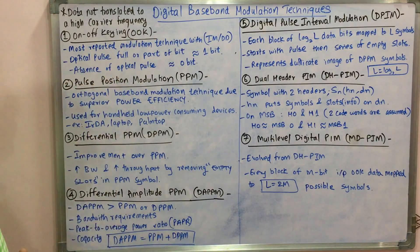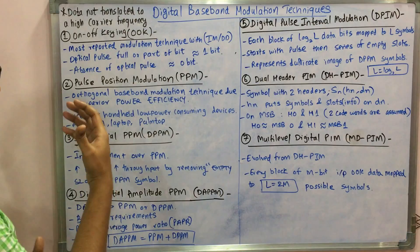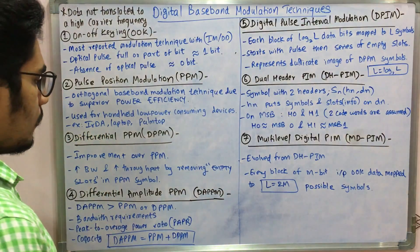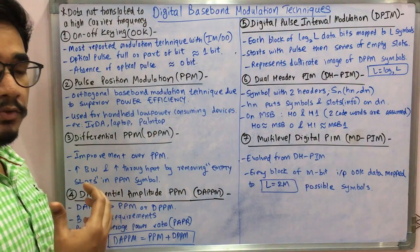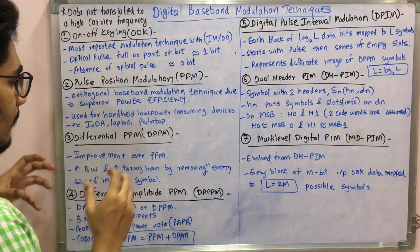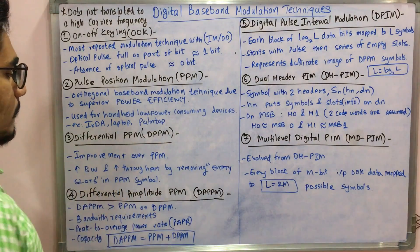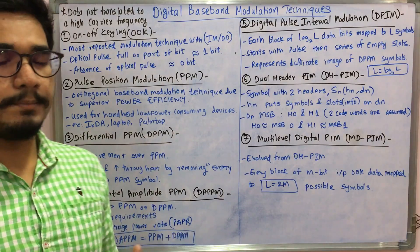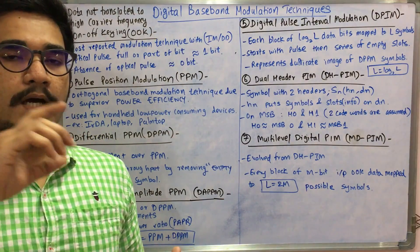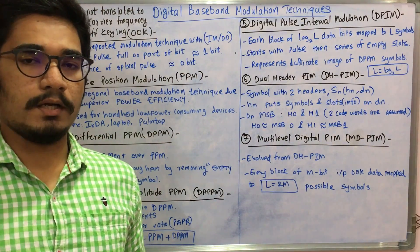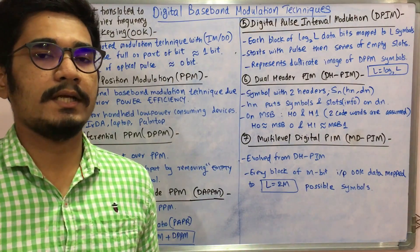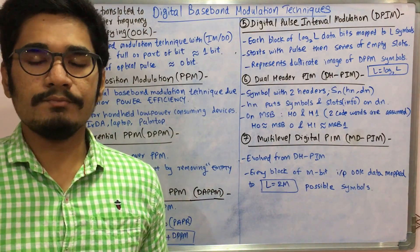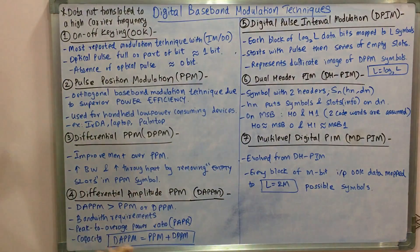The third technique is an improvement over PPM: Differential Pulse Position Modulation (DPPM). It targets improving the bandwidth as well as the throughput by removing the empty slots, which we call the PPM symbol. When you see the signal on a graph, you can observe some empty slots — those empty slots are identified, removed, and then the signal is further processed.